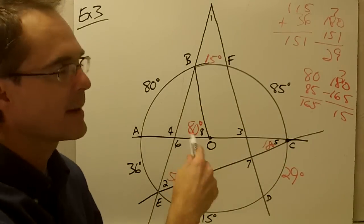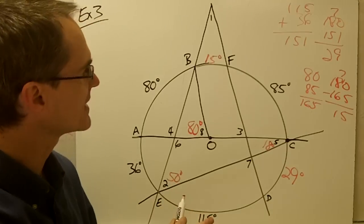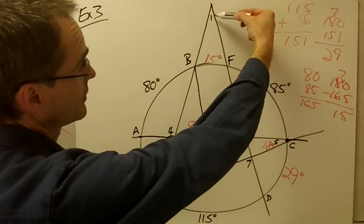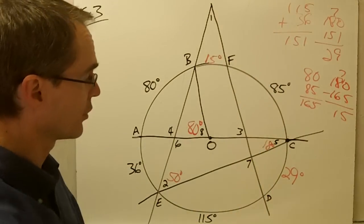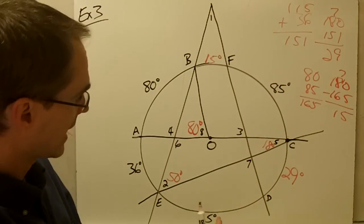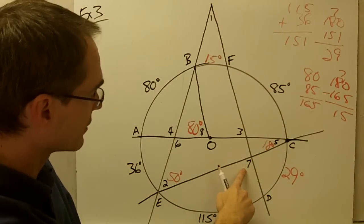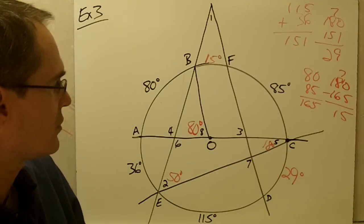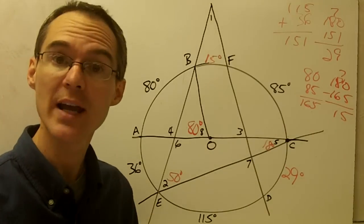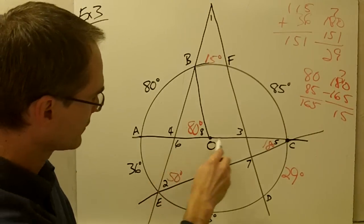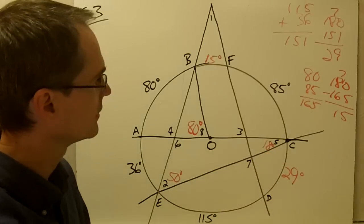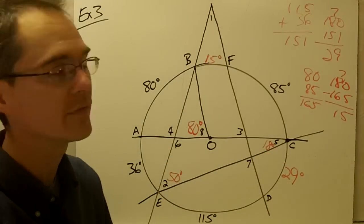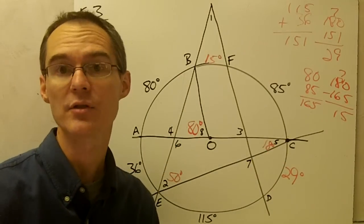I'm going to let you figure out the rest of these angles. For some you'll probably use your outside angle formula, for others your inside angle formula, and you might even need to use what you know about the three interior angles of a triangle to find some of them. I'll leave these remaining angles for you to find, and we'll take a look at these in class tomorrow.